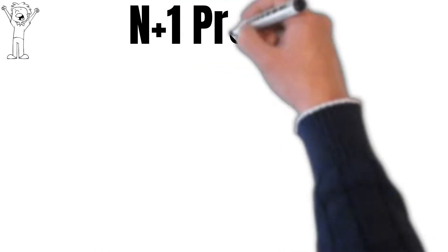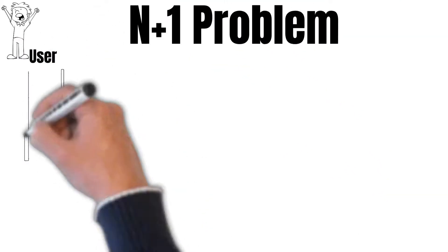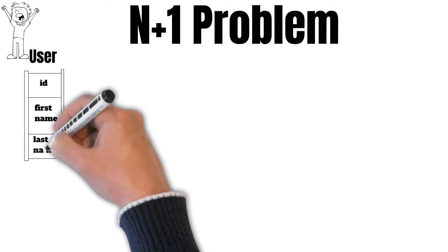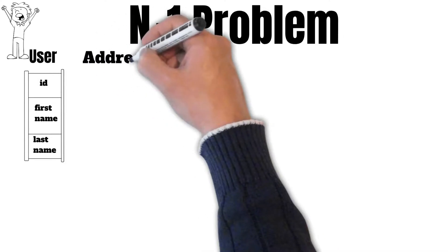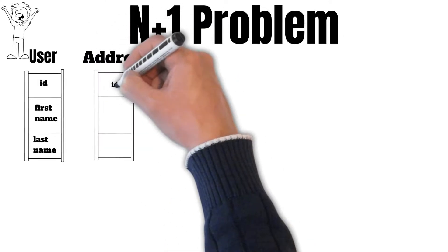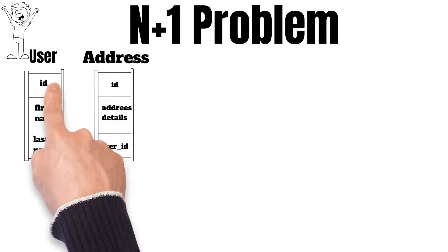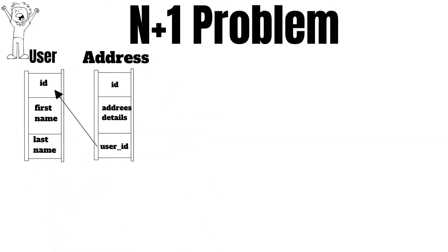The biggest disadvantage of using Hibernate is the n plus one problem. So suppose we have a user table which has columns like id, first name, and last name, and we have an address table which has columns like id, address details, and the user id for which this address belongs.